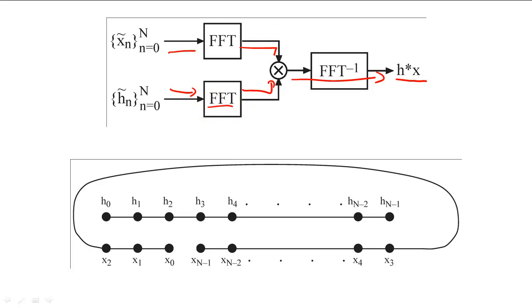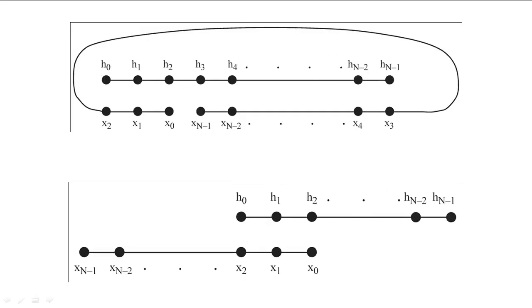Unfortunately, cyclic convolution is not the same as linear convolution. In the top diagram, we see how cyclic convolution loops the later samples of the input around the filter coefficients.